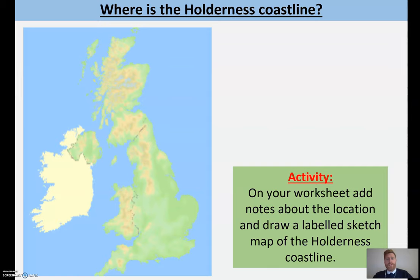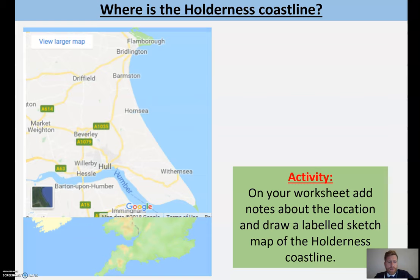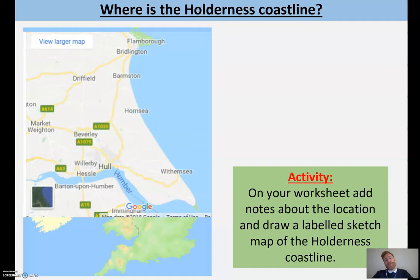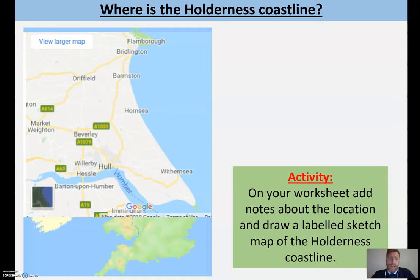Let's have a bit more of a look at Holderness and where it is. As geographers, we should always locate our case study first. Holderness is in the northeast of England. We can see Spurn Point, which is the spit we also studied, and you've got the River Humber coming down here. The Holderness coastline is all this stretch of coastline, and I want you to draw a sketch map showing it, including the main towns we'll be talking about.